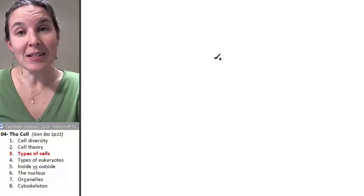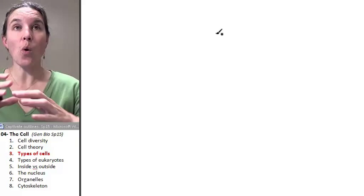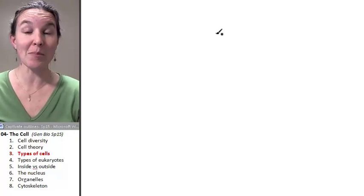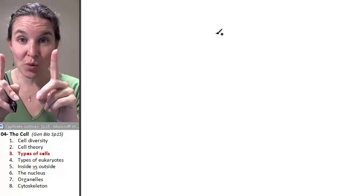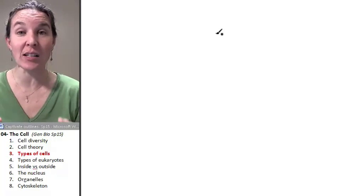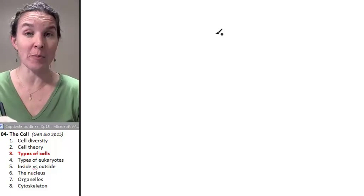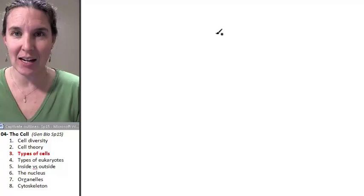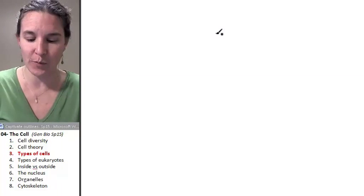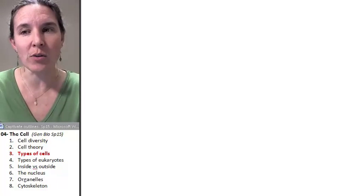There are two main types of cells. So all the cells on the planet can be divided into two main categories, and you will definitely be held accountable for being able to determine if I give you a cell, any cell, for telling me which of these two categories it fits into. Are you ready for your categories?